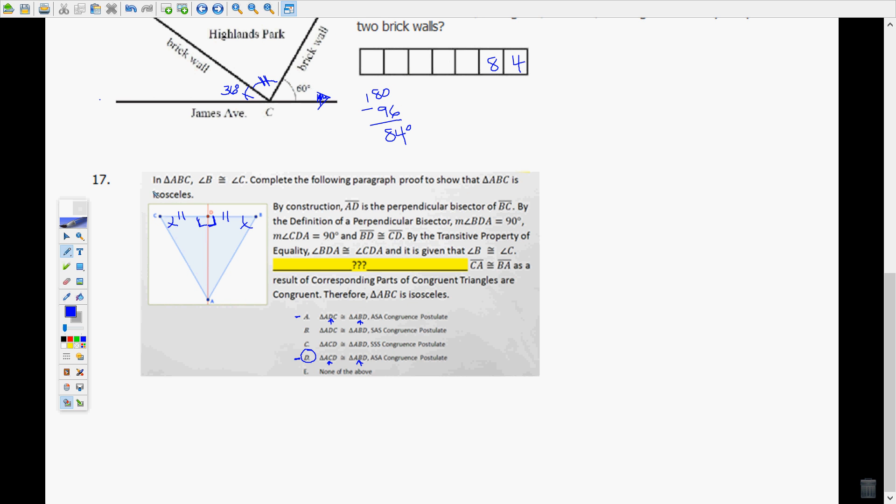Number 17, in triangle ABC angle B is congruent to angle C. Complete the following paragraph proof to show that triangle ABC is isosceles. Isosceles means that it has at least two sides congruent. So we're trying to prove that side AC is congruent to side BA. So it talks us through by construction AD is a perpendicular bisector of BC. By the definition of perpendicular bisector, these angles in here will be 90 degrees and BD will be equal to CD.